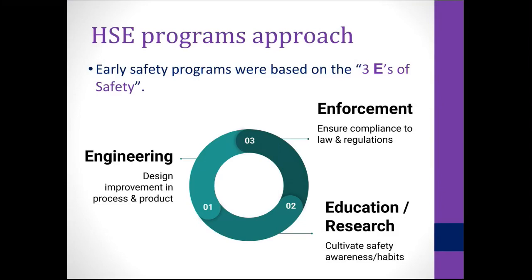Regarding the HSE programs approach — early safety programs were based on the three E's of safety. There are now four and five E's discussed online, but we'll stick with the traditional three: Engineering, Education, and Enforcement. Engineering describes design improvement in process and product — you design, develop, implement, operate, and maintain safety programs for employees. Education cultivates safety awareness and habits, increasing a person's understanding. The strategy involves promoting a safe environment, teaching safety rules, and creating awareness of the benefits and goals of safety in the community and workplace.